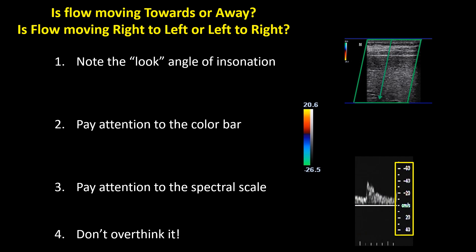I hope this tutorial on how to determine if flow is moving towards or away from the transducer — or whether flow is moving from right to left or left to right on the image — was useful to you. To summarize: note the look angle of insonation, always pay attention to the color bar as well as the spectral scale, and don't overthink it. While we end up switching back and forth a lot and it seems like a lot to keep track of, pretty soon it becomes pretty second nature.